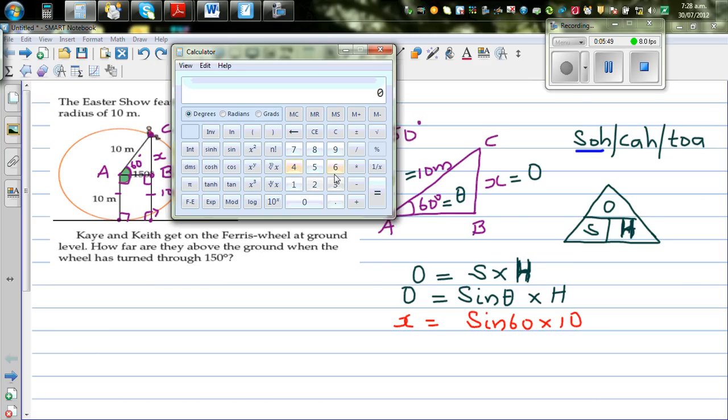So I will go 60 sine—where is sine? 60 sine is this number, times—where is the times key?—times 10, equal. So that is 8.66 meters.